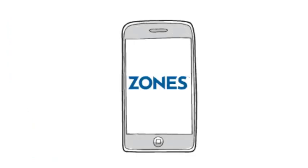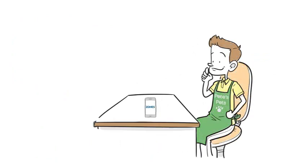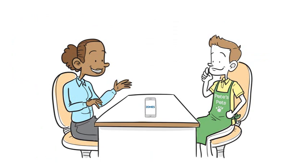So Pete used his smartphone to connect with his Zones account executive, Patty, and asked how he could leverage that smartphone data and learn more about his customers.